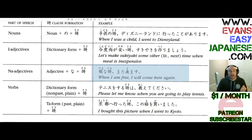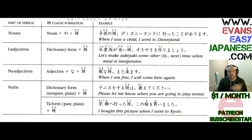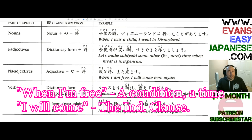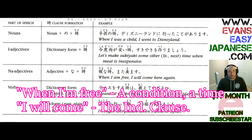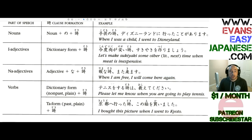Hima no toki, mata kimasu: 'When I am free, I will come here again.' Which one of those is the important sentence? When I am free — or I will come here again? The independent clause is 'I will come here again,' whereas the dependent clause is 'I am free.' When I am free, we could just ignore that — the real sentence is 'I'll come here again.'